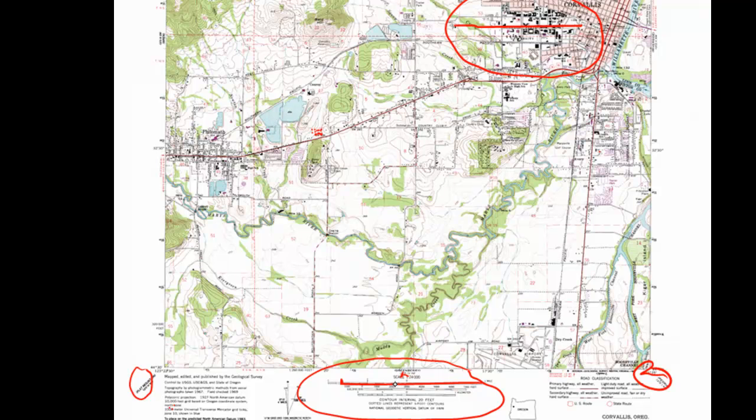We find that 1.5 inches on the map at the level I am viewing it at corresponds to 1.8 miles in the real world — 1 mile, 1.1, 1.2, 1.3, 1.4, 1.5, 1.6, 1.7, 1.8 miles.